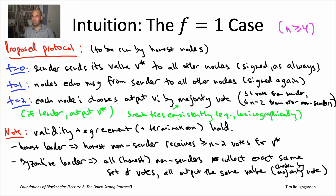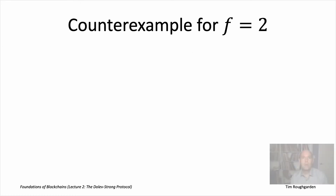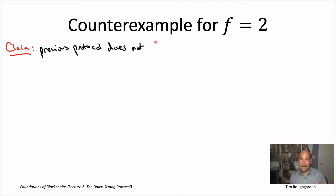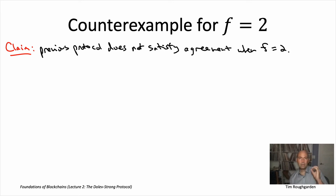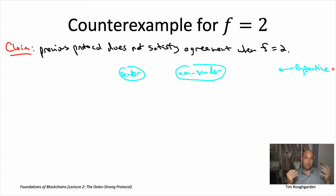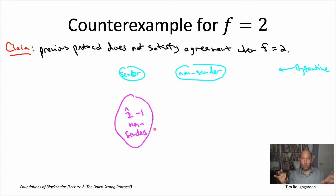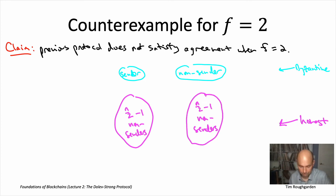I want to show you a violation of agreement — the protocol from the previous slide does not satisfy agreement when f equals two. There are n nodes total — let's assume n is even for simplicity — with at most two Byzantine nodes. Let's assume the sender is Byzantine and one non-sender is also Byzantine. Conceptually, we split the other n minus two honest nodes into two groups of equal size, each of size n over two minus one. What this counterexample makes clear is that when working with Byzantine faults, you have to deal with the case where all Byzantine nodes are conspiring to ruin your protocol.